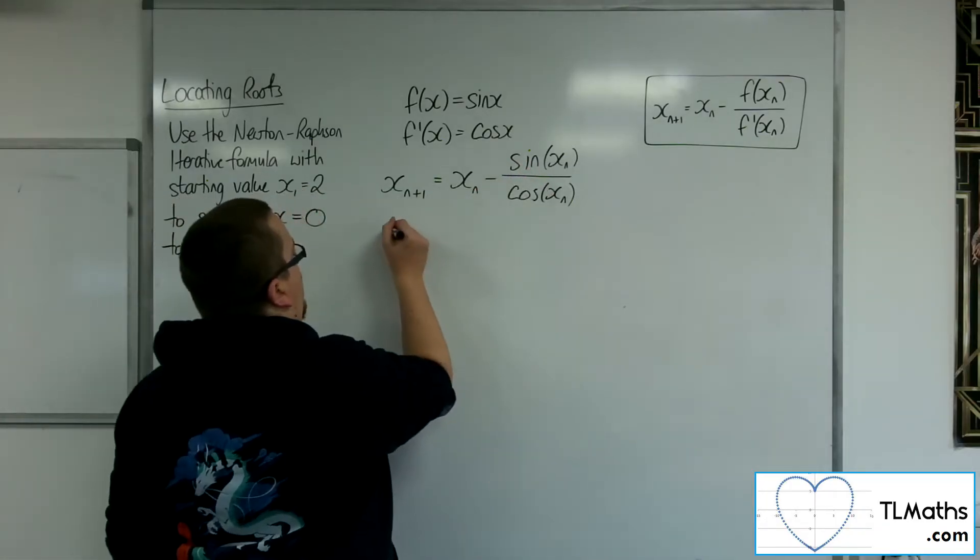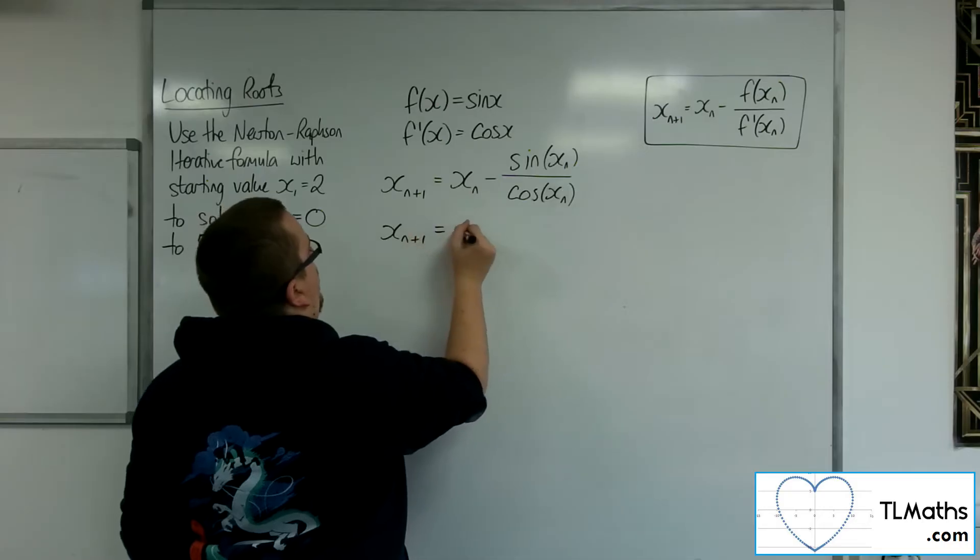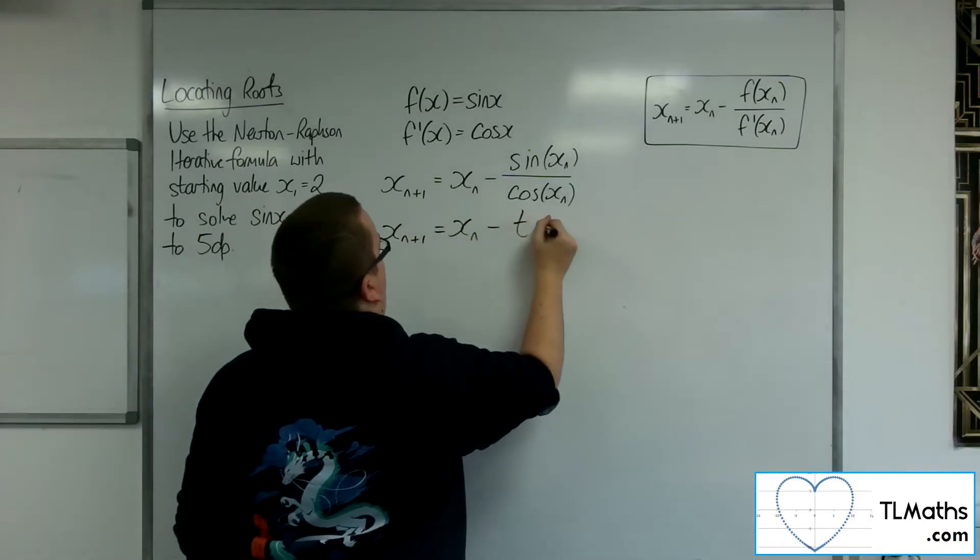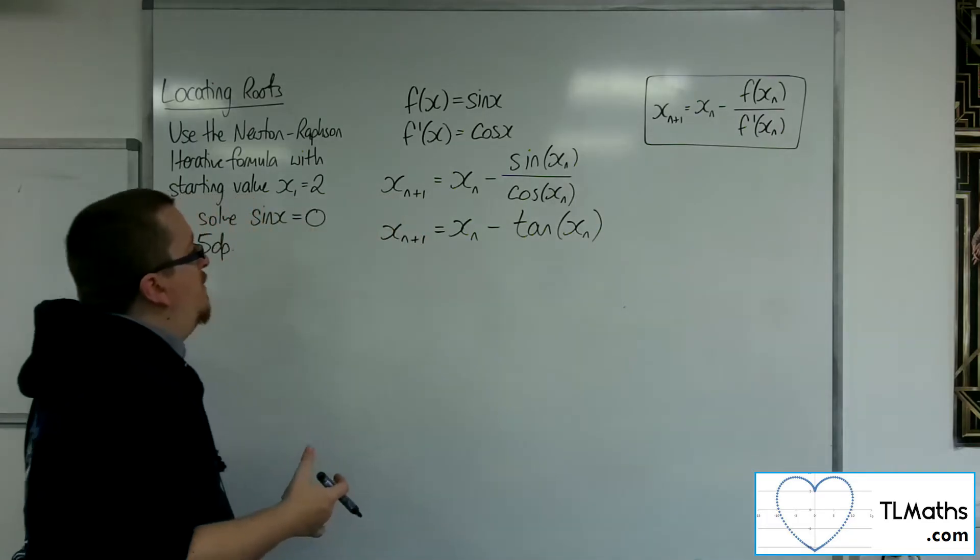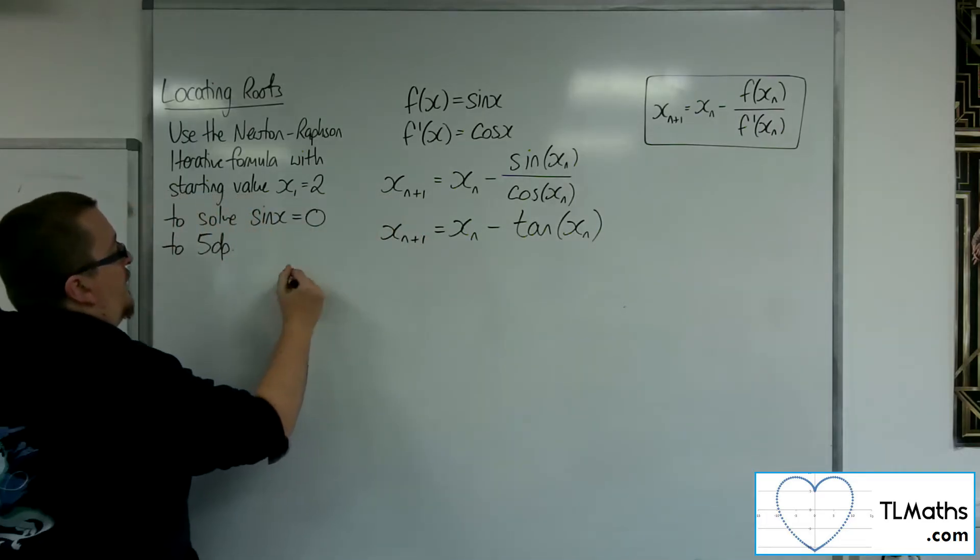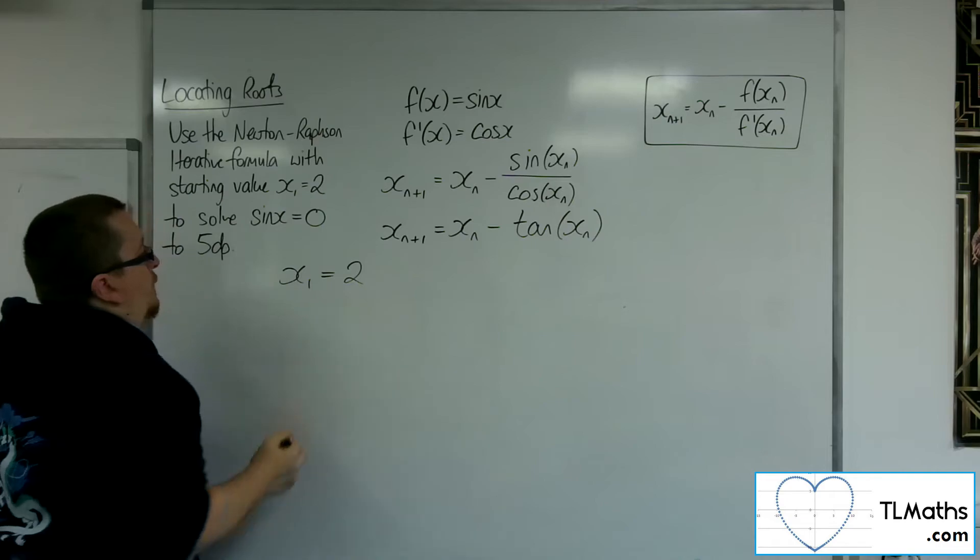OK, so we could write that as xn plus 1 is xn take away tan of xn. OK, so we've been given a starting value of x1 is equal to 2.